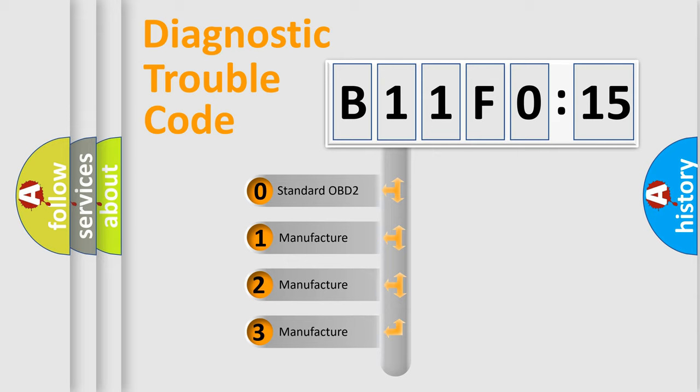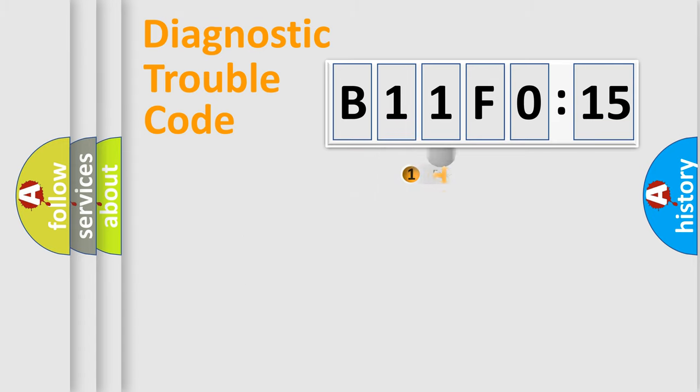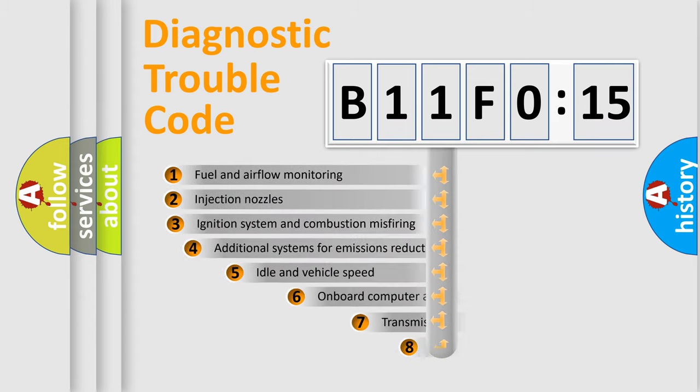If the second character is expressed as zero, it is a standardized error. In the case of numbers 1, 2, or 3, it is a manufacturer-specific expression of the car-specific error.